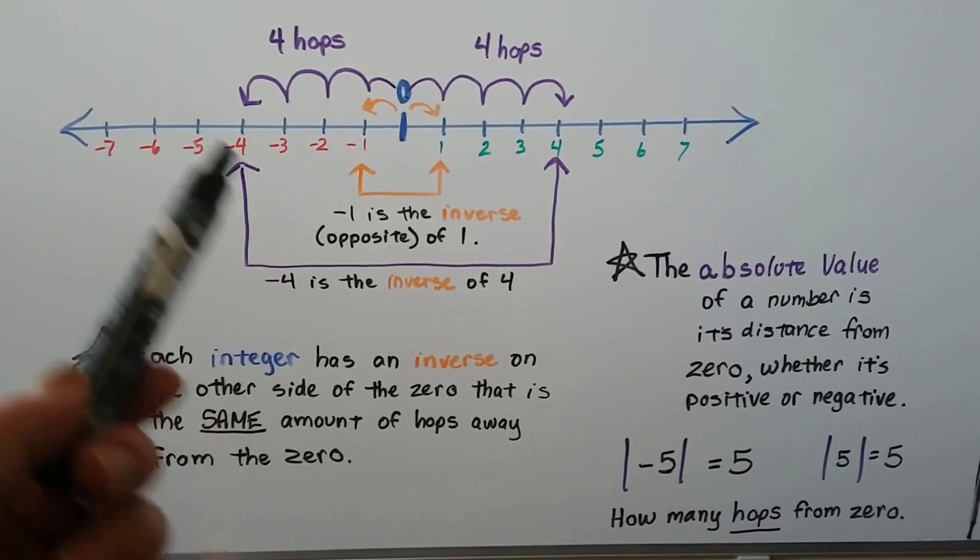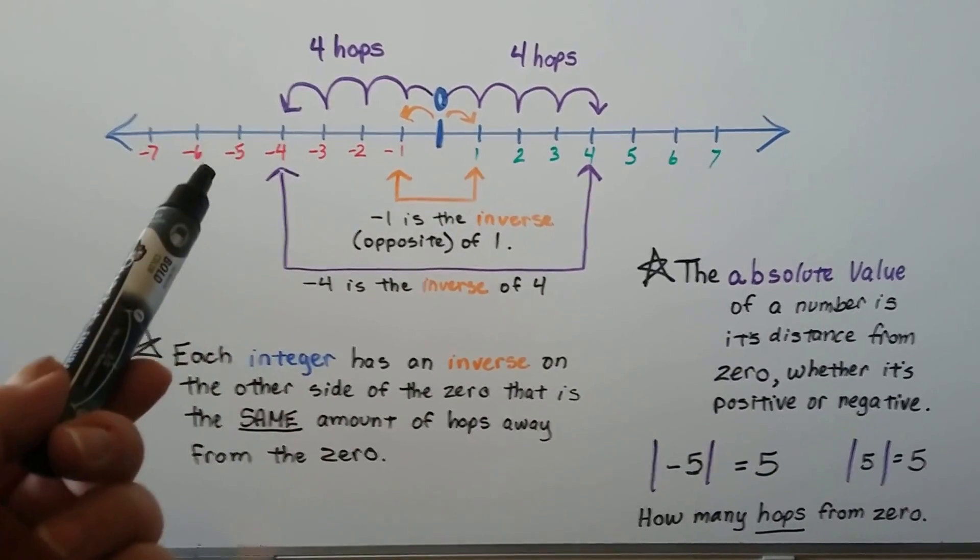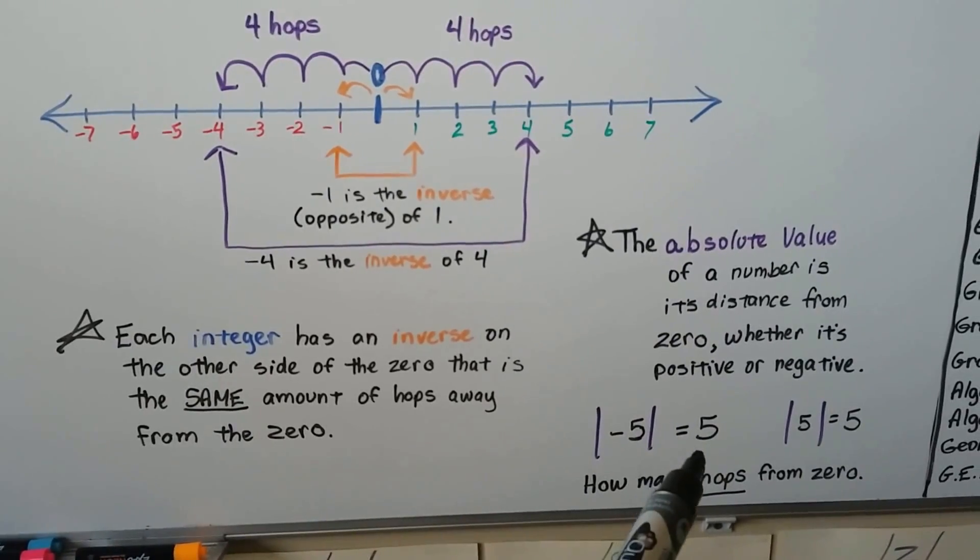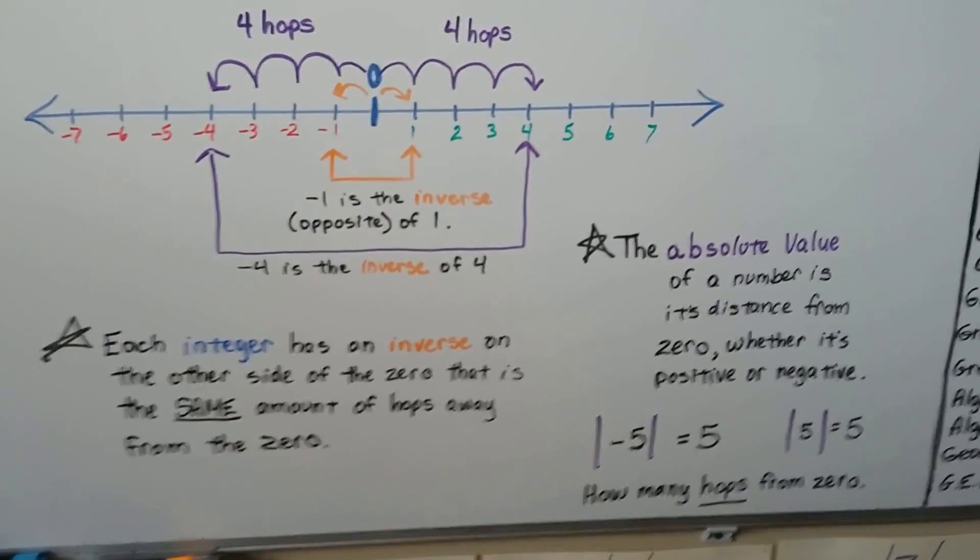It doesn't matter if it's negative or positive, it's still just 5 hops away from 0. It doesn't matter which side of 0 it's on, it's still 5 hops. So the absolute value of negative 5 is 5 and the absolute value of a positive 5 is 5. It's 5 hops from 0.